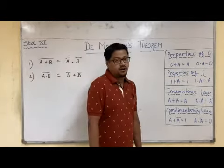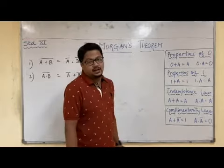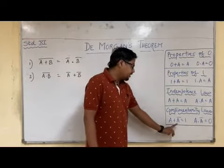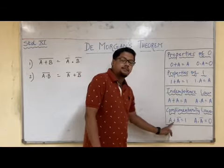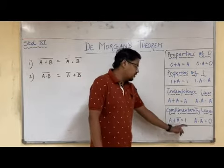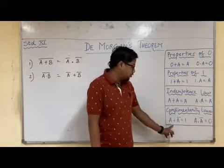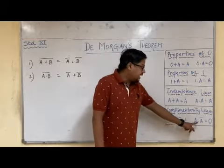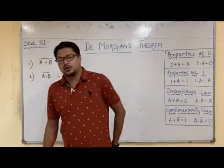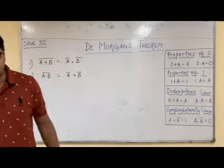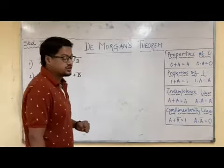Finally, a very important law — the Complementarity law. Same variable with its complement: A plus A̅ equals 1. Why is it equal to 1? Because both are the reverse of each other. A dot A̅ is equal to 0. So these are very important rules that we can use in De Morgan's theorem proof.